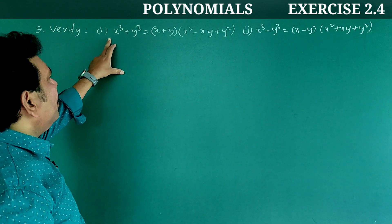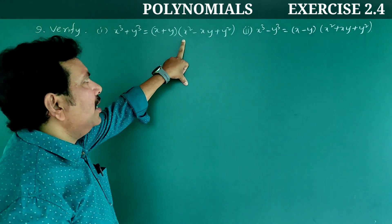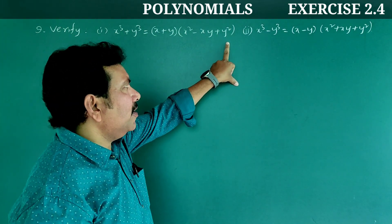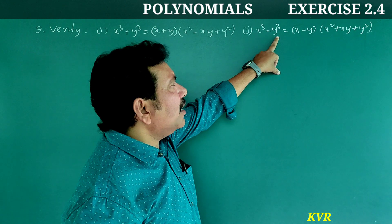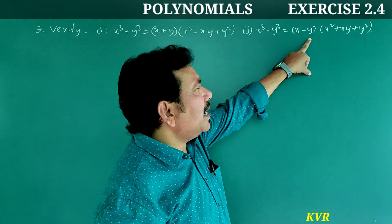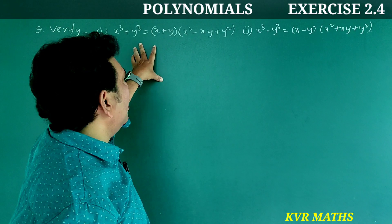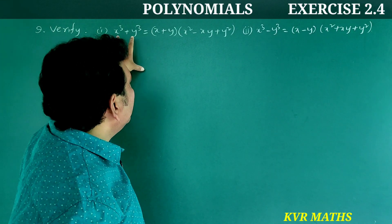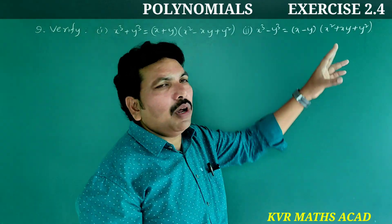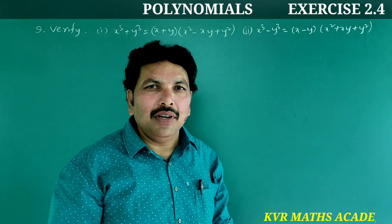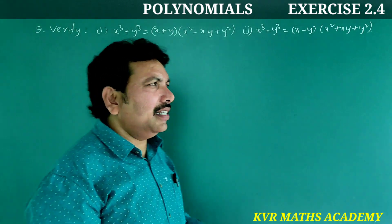Question 9: Verify — first, x³ + y³ = (x + y)(x² − xy + y²), and second, x³ − y³ = (x − y)(x² + xy + y²). We will verify both of them one by one.